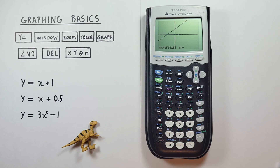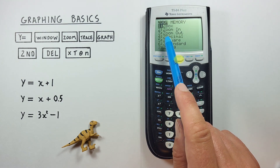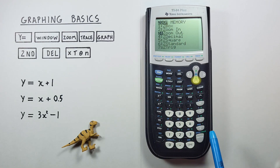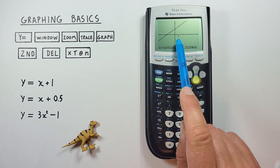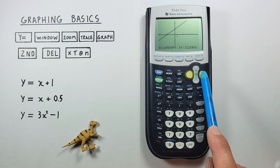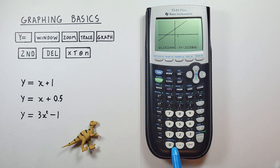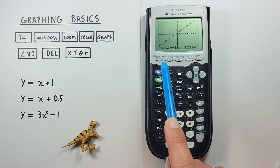If we want to zoom out, again all we do is press the zoom key, scroll down to zoom out, and select it. Again, we have a little cursor there that asks us where we want to center our zoom. So we'll center there and zoom out.